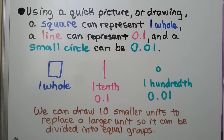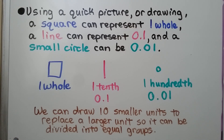Using a quick picture or drawing, a square can represent one whole, a line can represent one tenth, and a small circle can be one hundredth. We can draw 10 smaller units to replace a larger unit so it can be divided into equal groups. Then we'll cross out that larger unit because it was regrouped.